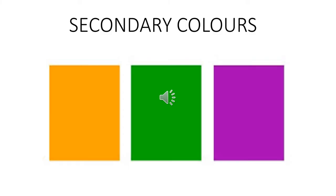For example, red and yellow mix to form orange. Blue and red mix to form purple. And yellow and blue mix to form green color. Now let us see them individually. So these are the secondary colors: orange, green, and purple.